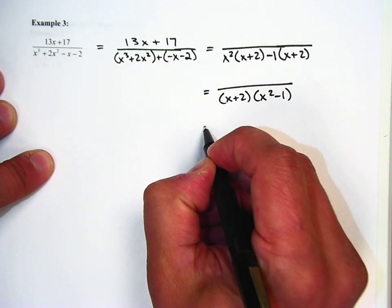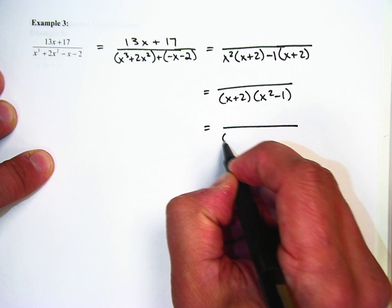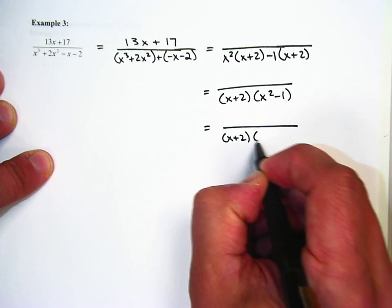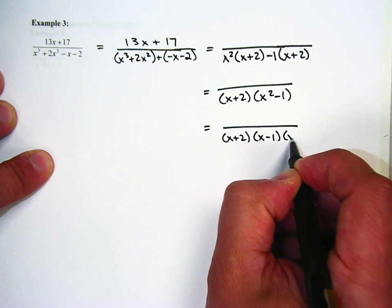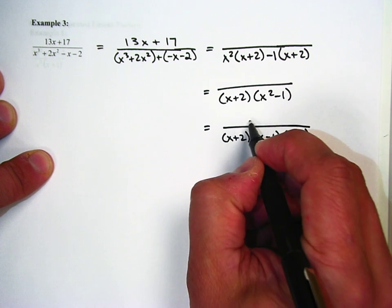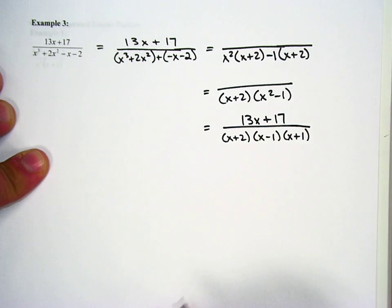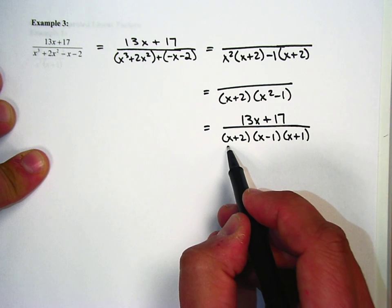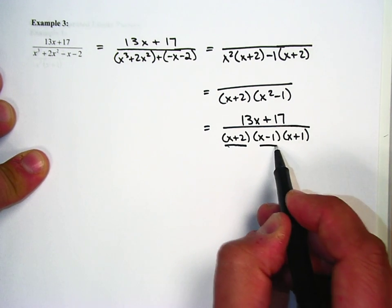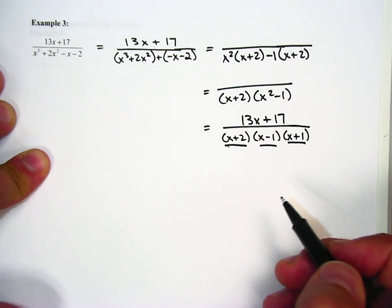Denominator is going to be x plus 2, x squared minus 1. The x squared minus 1 is a difference of squares, so we're going to just say x plus 2, x minus 1, x plus 1. And you can see, now when I write the numerator back up there, that we have three distinct linear terms.